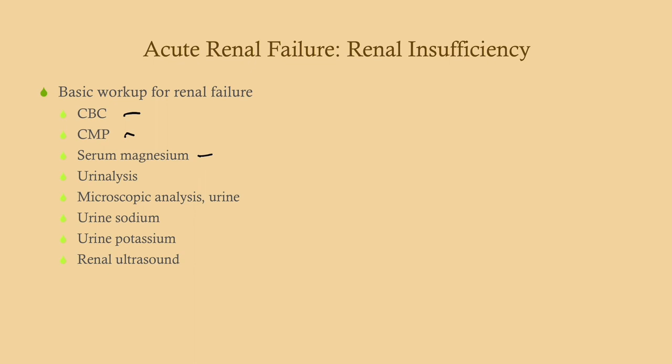For urine evaluation, get a basic urinalysis — you can add a dipstick protein to that. Then get a microscopic analysis: look for crystals and casts, which help identify what we're dealing with. Also order urine sodium, urine potassium, and a renal ultrasound, which should always be ordered as well.